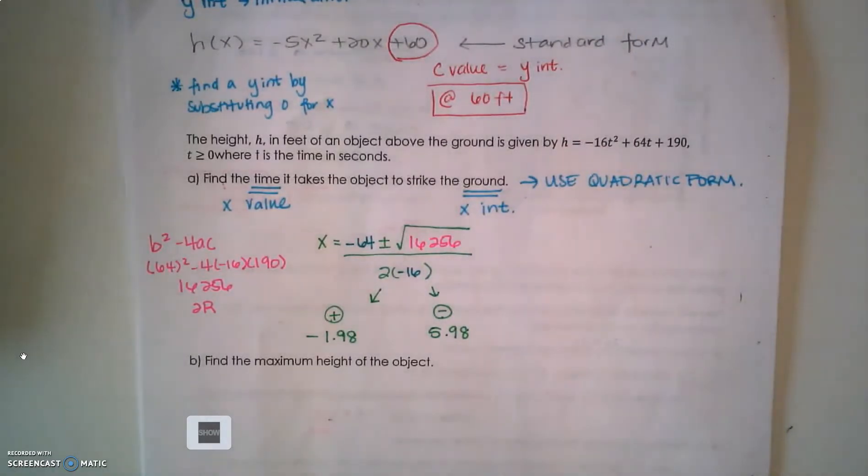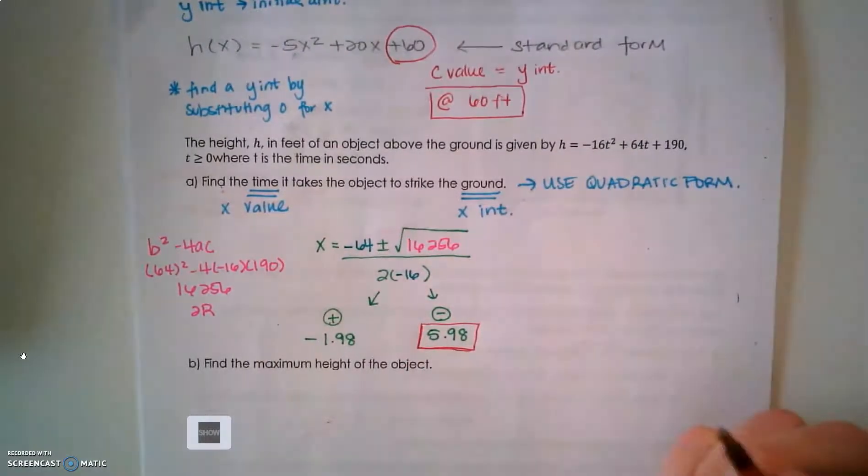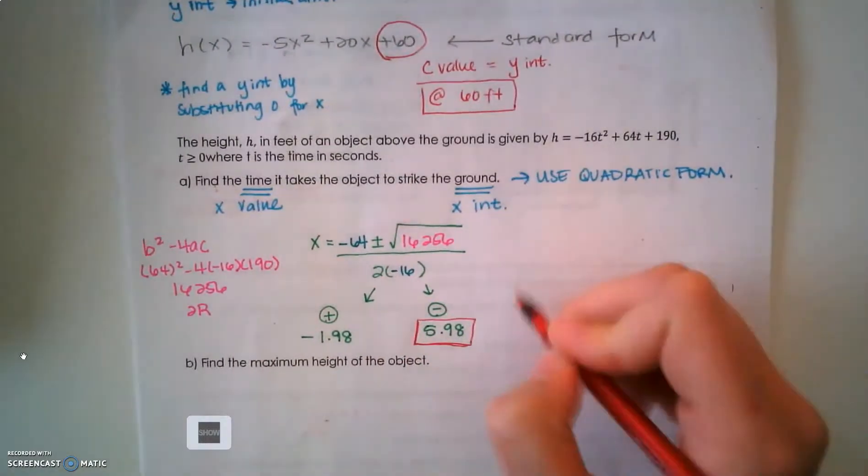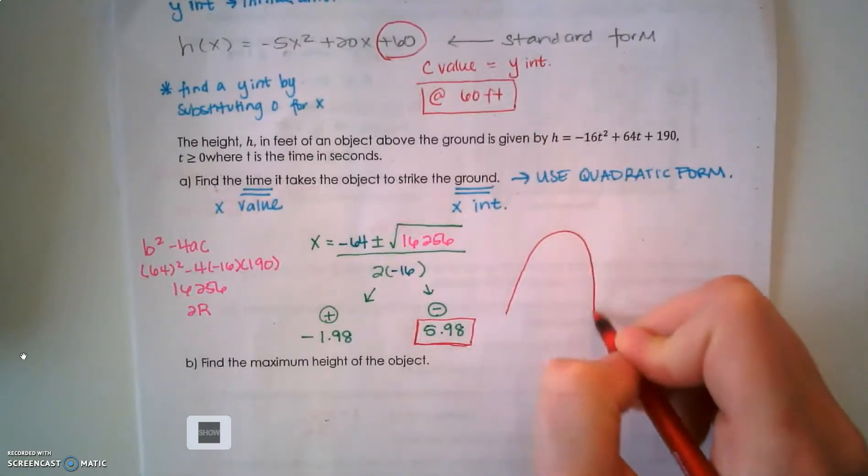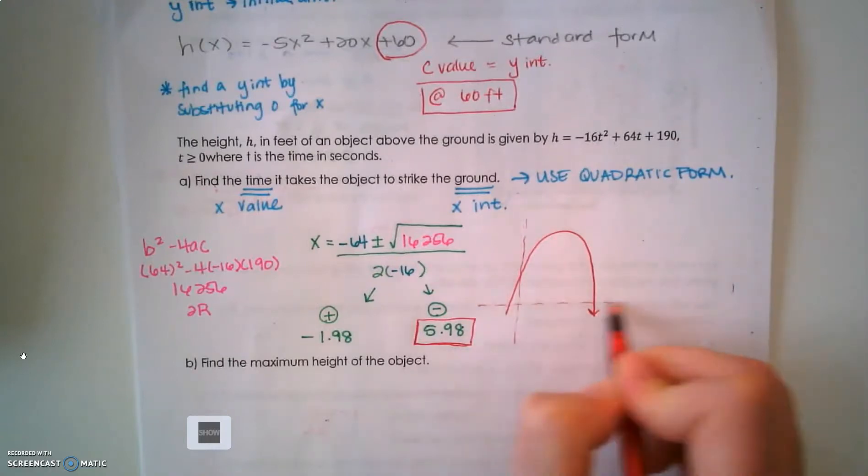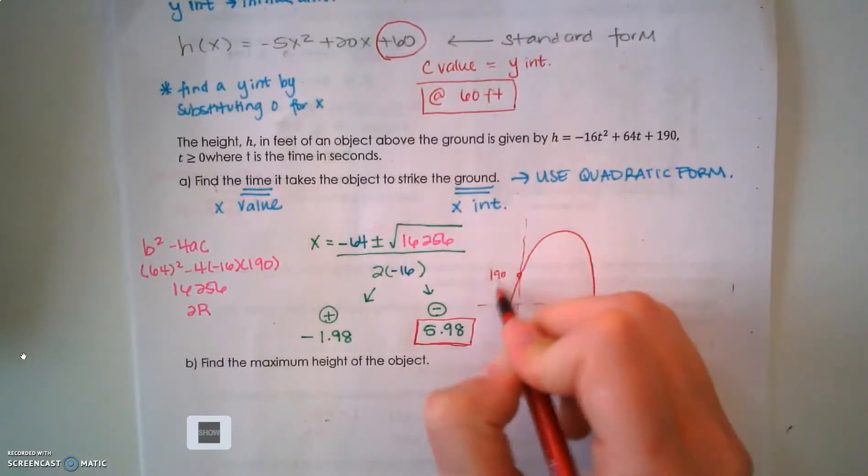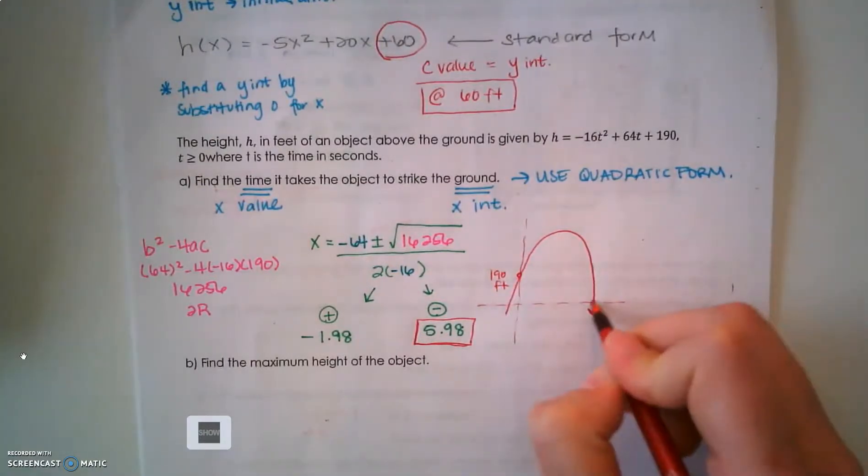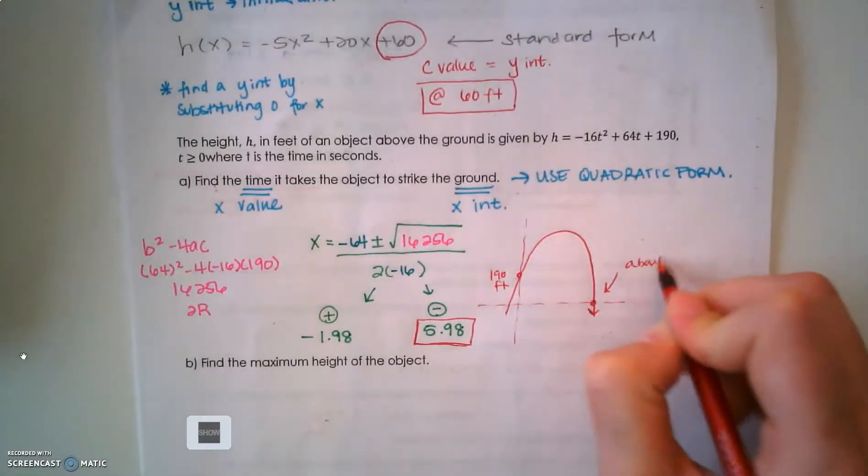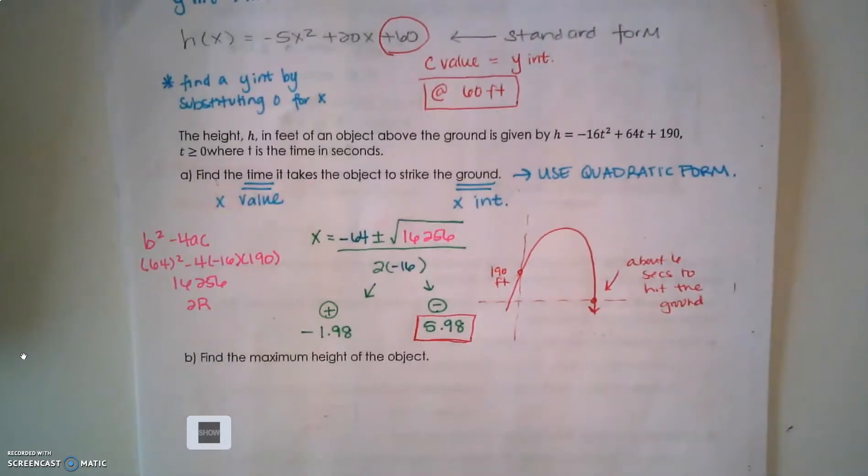Now it's asking you to find a time it takes for something to strike the ground. Time can't be negative, so this is my answer here, the positive version. Remember, this thing is going up and it's coming down. At some point here on the y-axis, it got launched at 190 feet, and it's landed here - took about six seconds to hit the ground. Remember you're picking the positive answers for time.